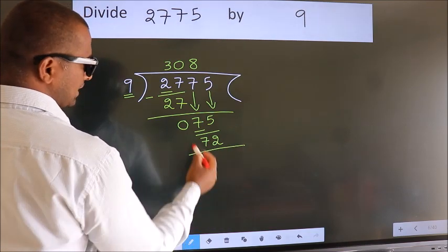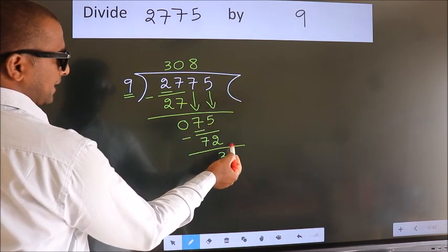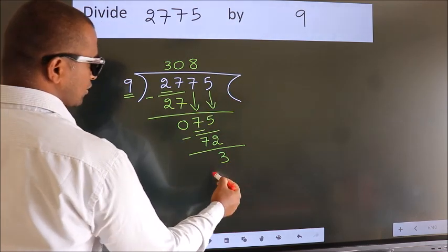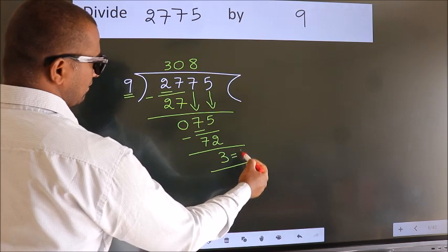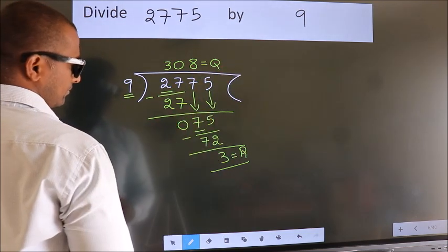Now we subtract. We get 3. No more numbers to bring down. So we stop here. This is our remainder. This is our quotient. Thank you.